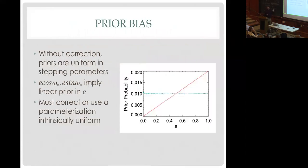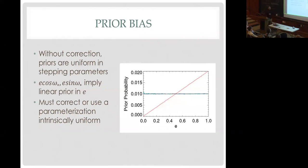The bottom line is that this shows the priors corresponding to various different ways of parameterizing the eccentricity: stepping directly in e and ω, stepping in √e·cos(ω) and √e·sin(ω), or stepping in e·cos(ω) and e·sin(ω). It's really important that you think about your priors and parameterization. You want something intrinsically uniform in physical space, or you need to correct your prior to be physically uniform by either importance sampling after the fact or by applying a weighting to your likelihood acceptance during the run.